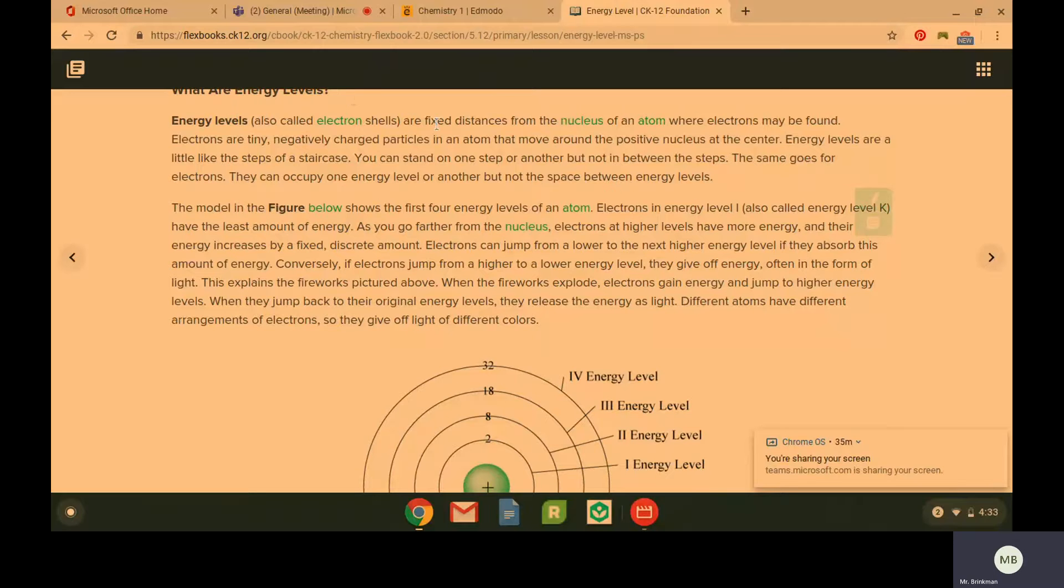These are fixed distances from the nucleus of the atom where the electrons may be found. So it's kind of like the Bohr model where we have a fixed distance from the nucleus.